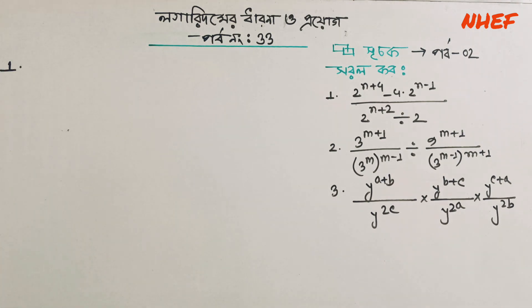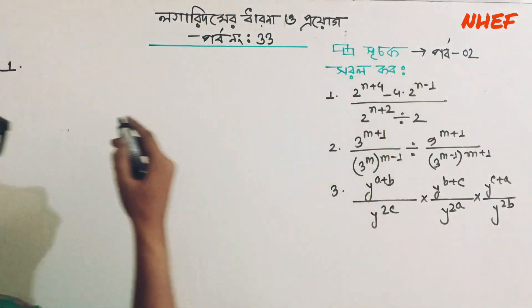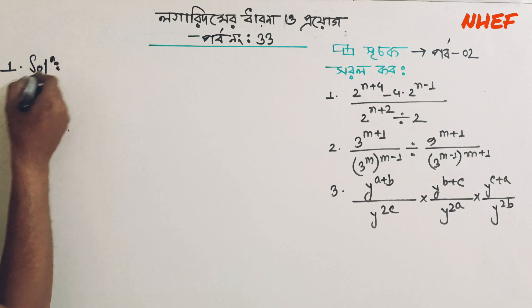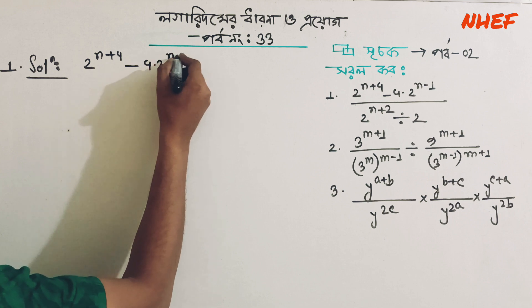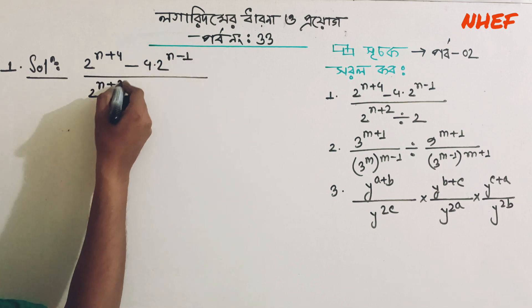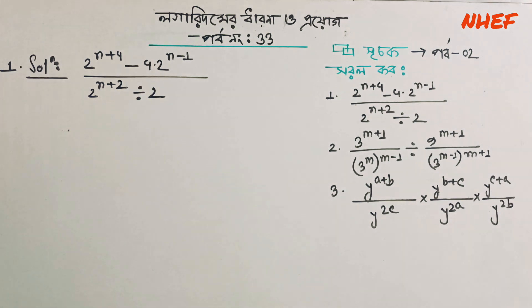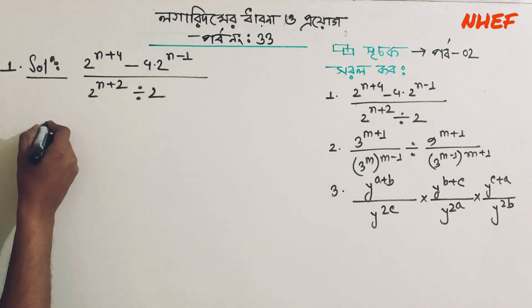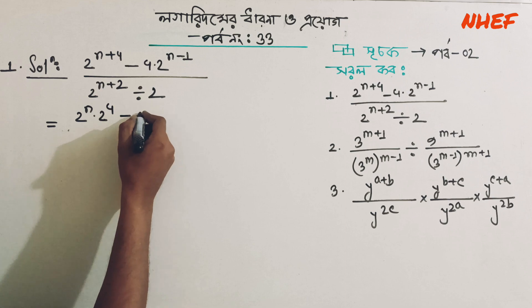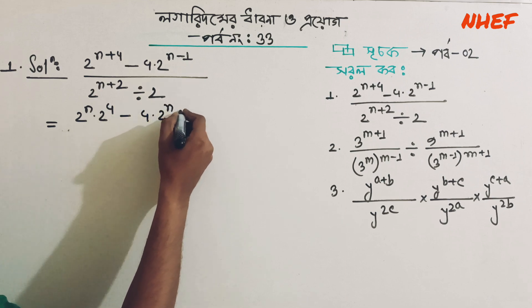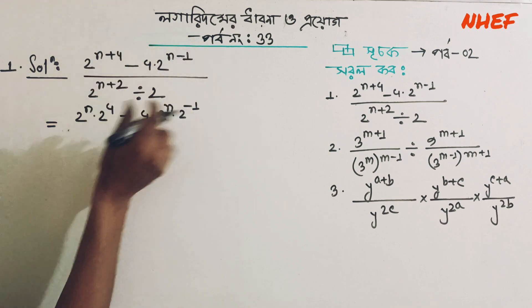The solution is 2 to the power n plus 4, minus 4 into 2 to the power n minus 1, divided by 2 to the power n plus 2. Plus 2 to the power n plus 2. Let's see how we can solve this problem. 2 to the power n into 2 to the power 4, minus 4 into 2 to the power n into 2 to the power minus 1 — this is going to solve this problem.